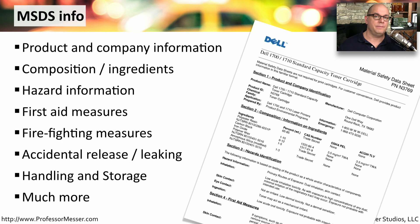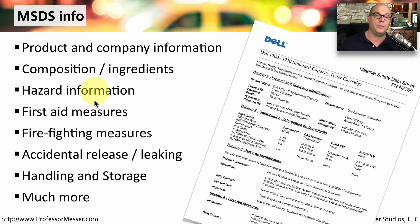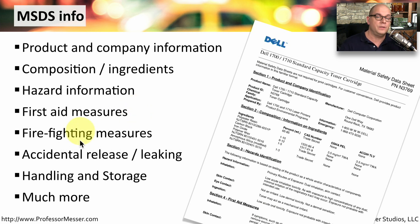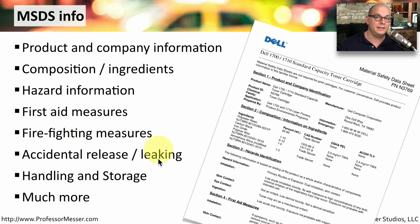The MSDS is going to contain information about what company and product this happens to be. It will cover the composition of the product and the ingredients inside of it, any hazard information — especially dealing with hazardous materials — first aid measures if anything ever goes wrong, how you should fight a fire if this particular item was to catch on fire, what you should do if there's an accidental release or leaking of the contents, how to handle it, how to store it, and so much more.